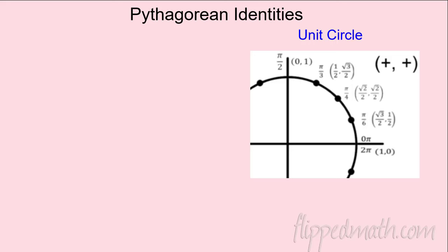Let's take a look at the next section on trig identities. Trig identities are fun — an identity is just something that holds true. These trig identities have trig functions that always hold true, and they relate to the unit circle.